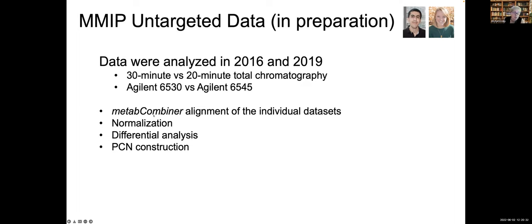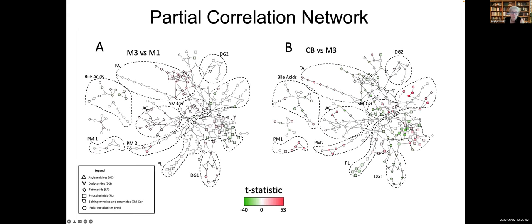This project is ongoing. We have parallel untargeted datasets generated here. There are two subsets of data generated in 2016 and 2019. We're trying to take advantage of different tools. Hana Hubbard presented his tool MetabCombiner in the context of unknown lipids analysis. Here, Hana applied this to align these individual datasets. Then we performed differential analysis and constructed partial correlation networks. These are partial correlation networks from the untargeted data.